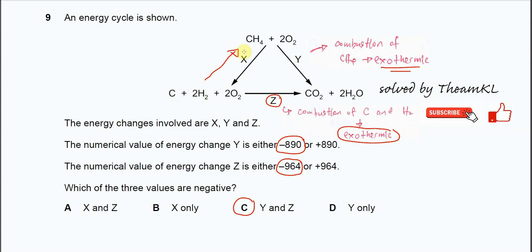The enthalpy change for the formation of methane is actually negative, around negative 74.8 kilojoules per mole. So if now it's reversed, it means it's positive. For this one it's positive 74.8 kilojoules per mole, so therefore X is actually a positive figure.